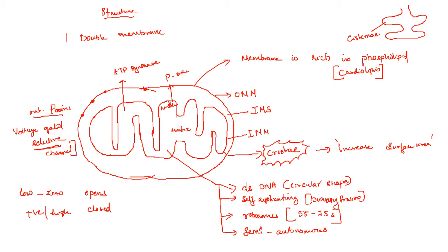Each folding of the inner membrane increases the surface area — this is the major reason why the inner membrane is folded so many times. The innermost portion of the mitochondria is known as the matrix.